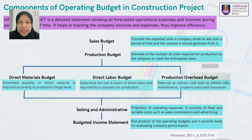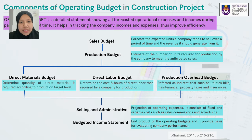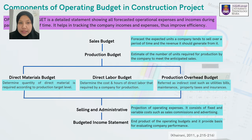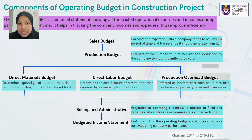My name is Noor Ami and I will continue by explaining about the components of the operating budget in construction projects. The operating budget is a detailed statement showing all forecasted operational expenses and incomes during a particular period of time. It helps in tracking company incomes and expenses, improving efficiency. The operating budget consists of many budgets: the sales budget, production budget, direct materials budget, direct labor budget, production overhead budget, selling and administrative budget, and the budgeted income statement.